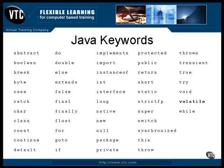A data item is declared as volatile to notify one thread that another thread may change its value at any time. A thread should always come back to the source to get the value instead of trusting a copy that it may have stored away somewhere.